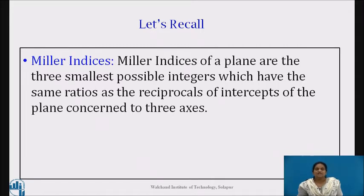Yes students, three smallest whole numbers are known as Miller indices representing the position and orientation of a lattice plane in a crystal. Now we will learn how to calculate the interplanar distance by using these Miller indices.